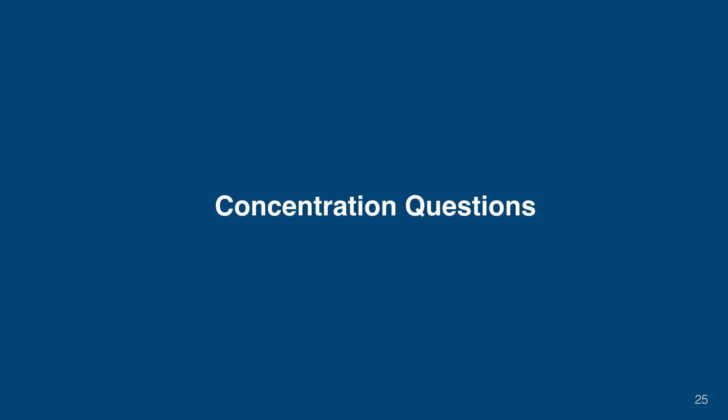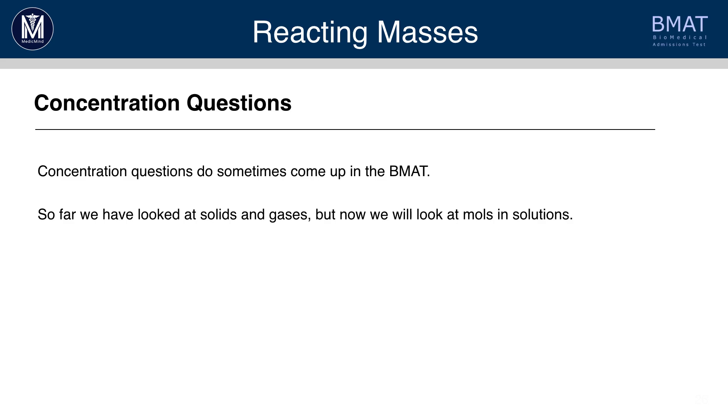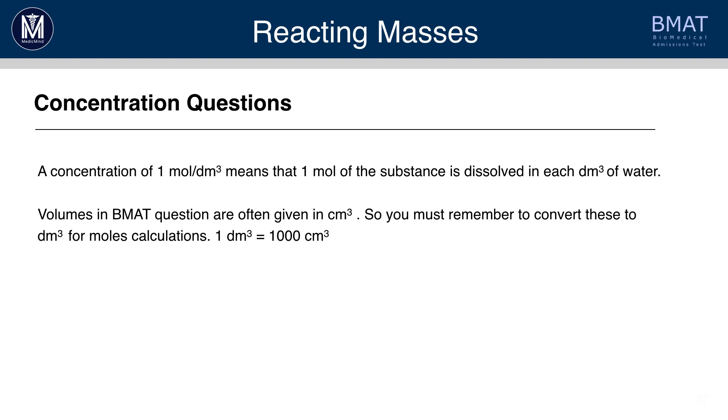So, let's have a look at concentration. So, sometimes concentration questions can come up in the BMAT. So far, we've looked at solids and gases, but now we'll look at moles in solution. So, a concentration of 1 mole per dm cubed means that 1 mole of a substance is dissolved in each dm cubed of water. So, often, volumes will be given in cm cubed, so remember that you have to convert these into dm cubed. 1 dm cubed equals 1,000 cm cubed.